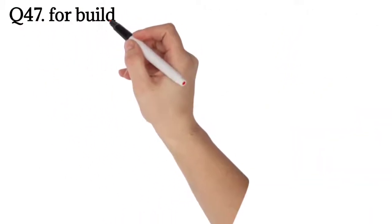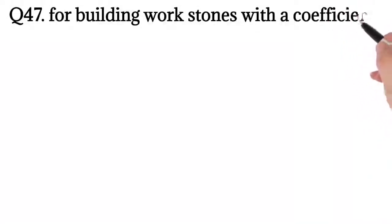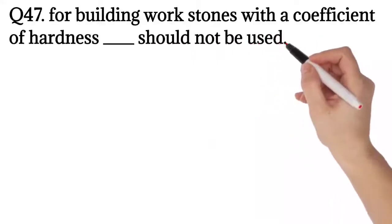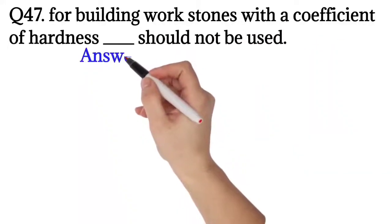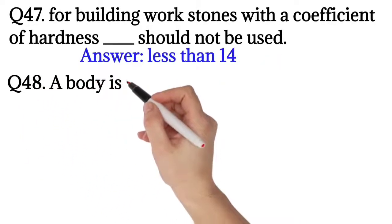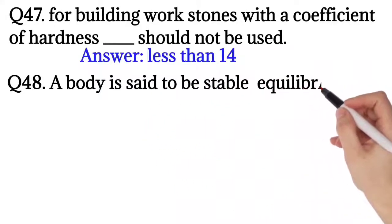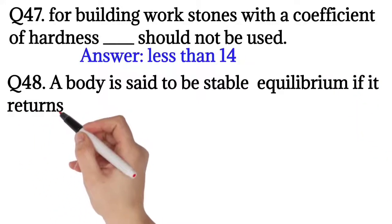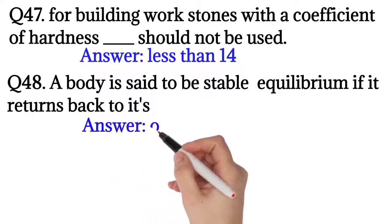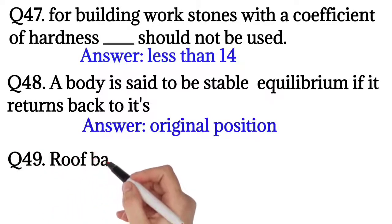Question number 47: For building work, stones with a coefficient of hardness should not be used. The answer is less than 14. Question number 48: A body is said to be in stable equilibrium if it returns back to its? The answer is original position.